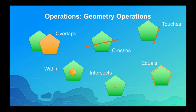We classify these functions into different categories. The first is geometry operations — I like to think of these as testing functions. They all return Boolean values, true or false. Do these two polygons overlap? Does this line cross this polygon? Are these two geometries equal? Is one within another, or do they intersect? These are common GIS operations that your users will likely be familiar with.